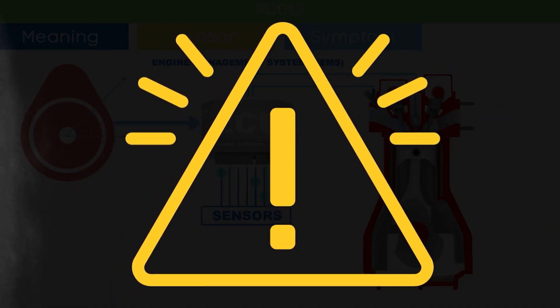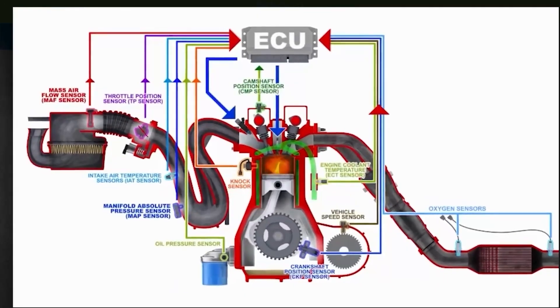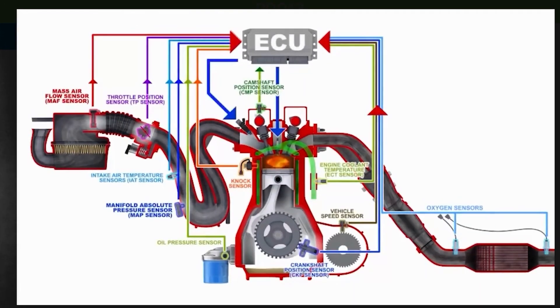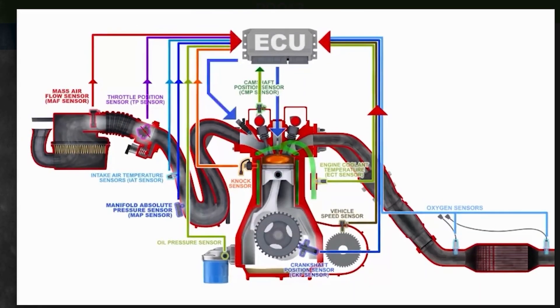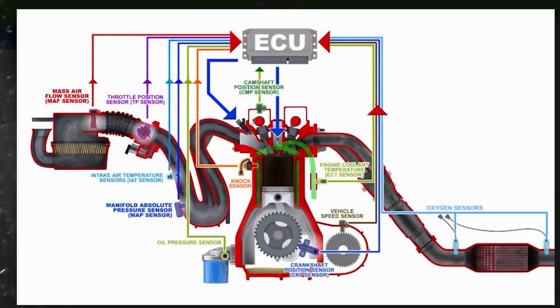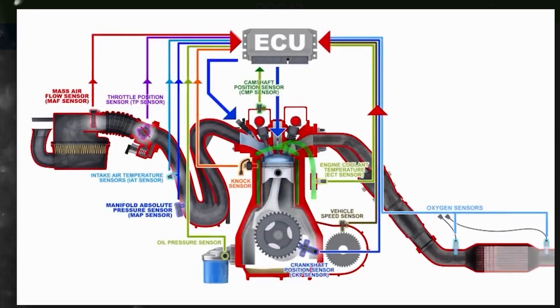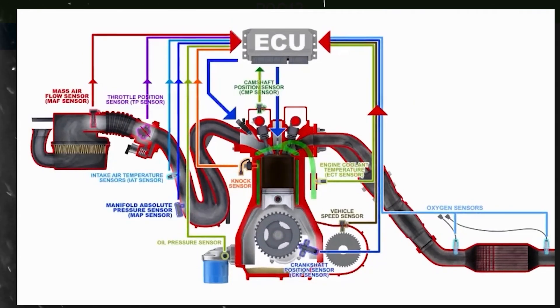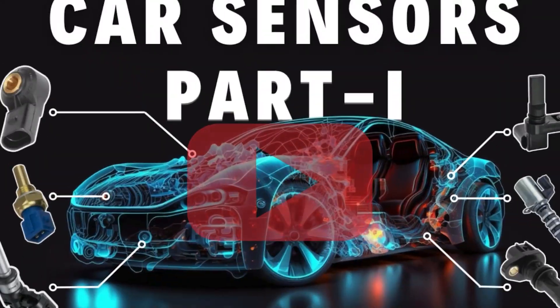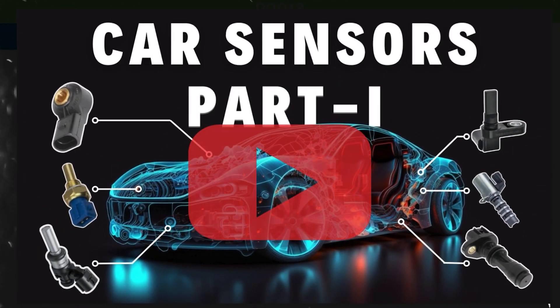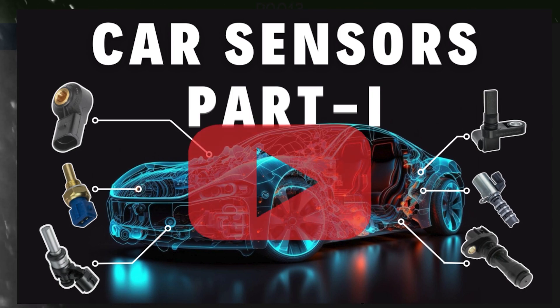Cam angle is only one of several engine management parameters used by the ECU. The ECU also relies on other EMS sensor inputs. To learn more about sensors of the engine management system, you can check our detailed video on car EMS sensors — check the link in the corner.